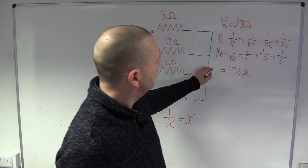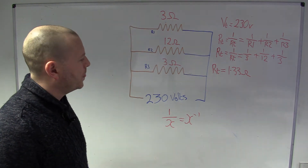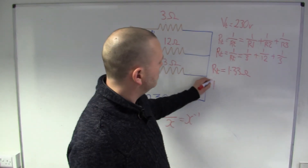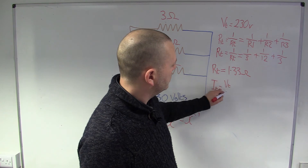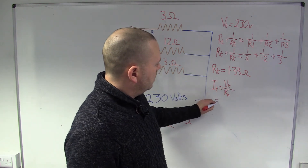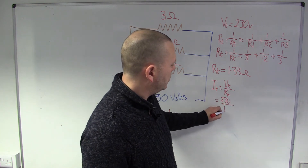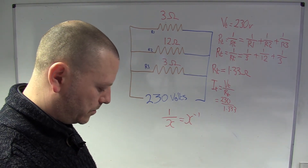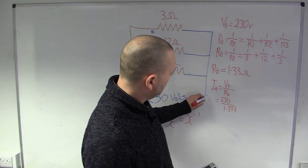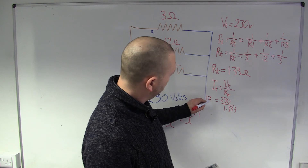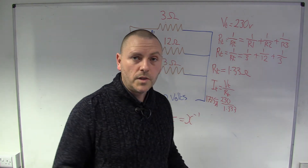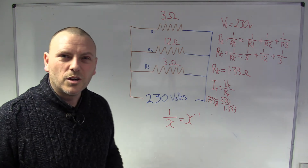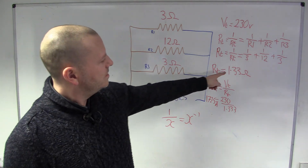So we've now got our total resistance, and we've got our total voltage. Using Ohm's law we can calculate our total current: Vt over Rt, which is 230 divided by 1.333 recurring. We get about 172.5 amps — quite a lot. But then we haven't really got a lot of resistance in the way, because collectively it's as low as 1.33 ohms.